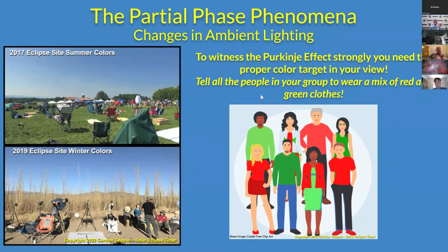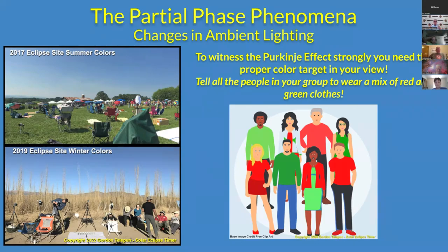I learned something important between 2017 and 2019. In 2017, we saw an amazing Purkinje effect — the gray effects and desaturation were astounding. In 2019, we didn't, and I realized the reason: to see the Purkinje effect, you have to have target color. In 2017 it was a summer eclipse on a green field with bright summer clothes and tents around. In 2019, we were in a winter eclipse in Argentina on a dirt field with everyone wearing bland winter clothes — not much target color. So for 2024, I recommend wearing a combination of green and red clothes. It may look ridiculous, but it gives you target for the Purkinje effect.